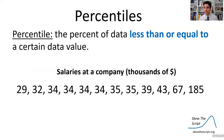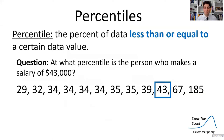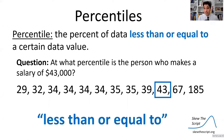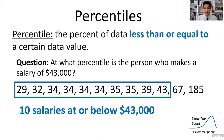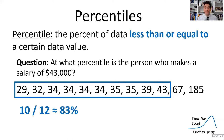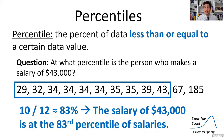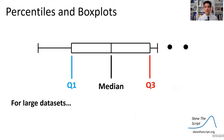Let's look at a simple example: here's a data set of 12 salaries at a company in thousands of dollars. At what percentile is the person who makes $43,000? We look at the percent of data less than or equal to $43,000. There are 10 salaries at or below $43,000, so that's 10 out of 12 total — or 83%. The salary of $43,000 is at the 83rd percentile of salaries.